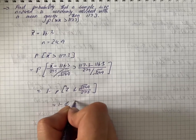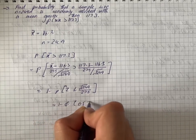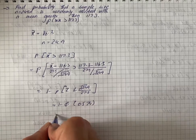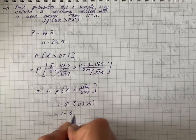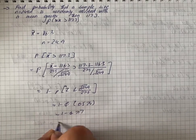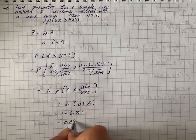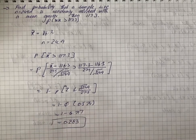and we have 1 minus 0.717, that turns out to be 0.283 as our solution.